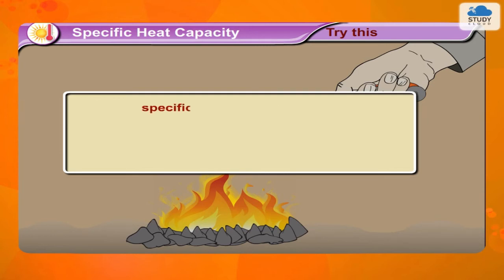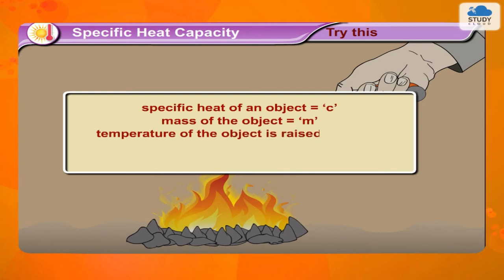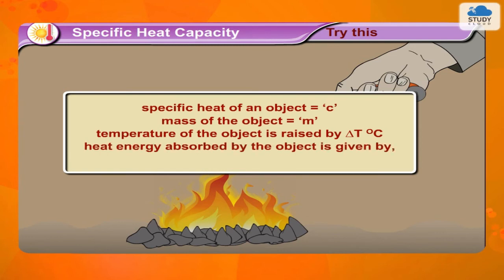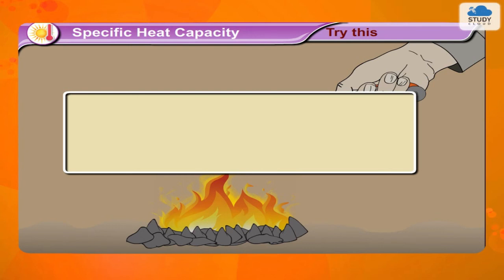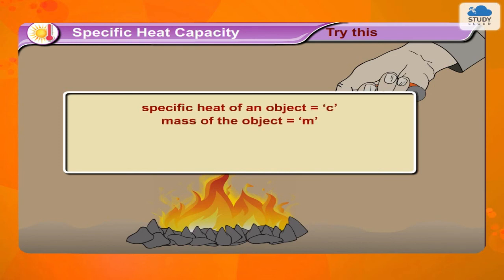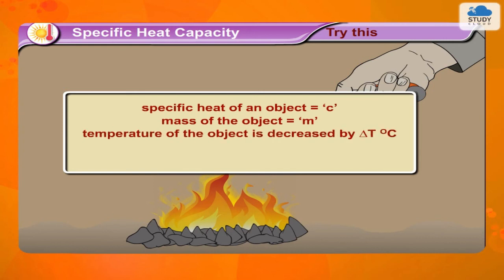If the specific heat of an object is C, the mass of the object is M, and the temperature of the object is raised by delta T degrees Celsius, then the heat energy gained can be calculated. Similarly, if the temperature of the object is decreased by delta T degrees Celsius, then the heat energy lost by the object will be M × C × delta T.